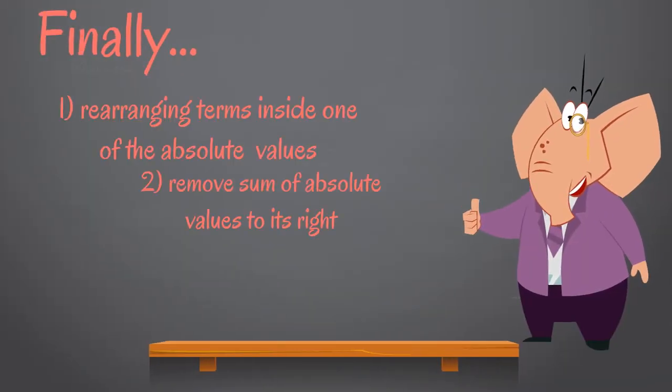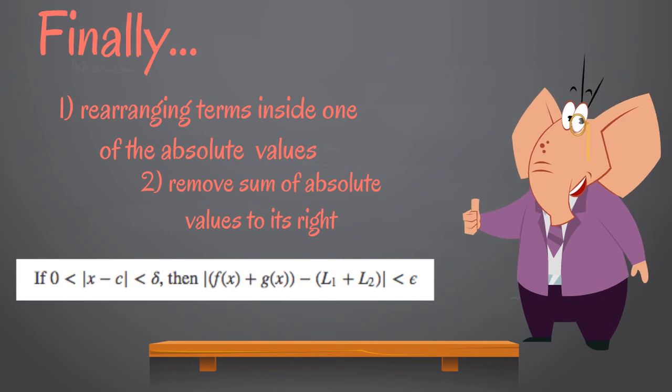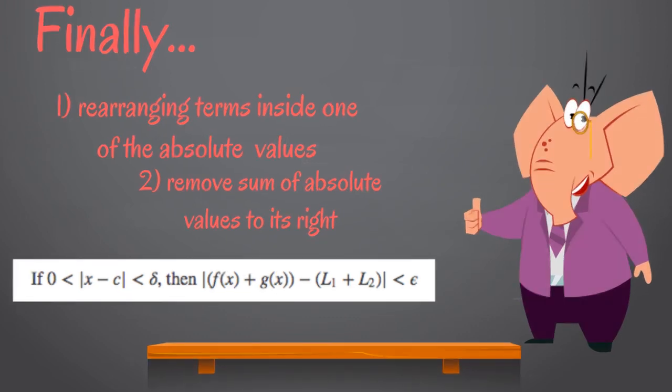rearranging some terms inside one of the absolute values and removing the sum of absolute values to its right, we find that if 0 < |x - c| < delta, then |f(x) + g(x) - (L1 + L2)| < epsilon, which is what we hoped to show.